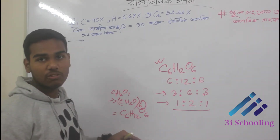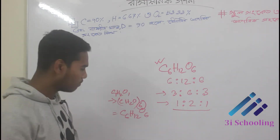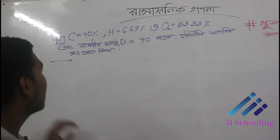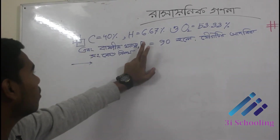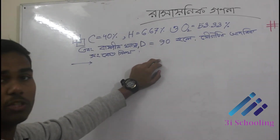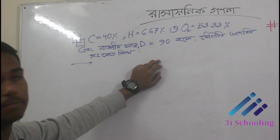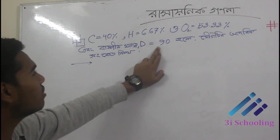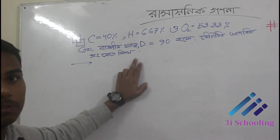If you have any questions, you can answer the question. Carbon is 44%, hydrogen is 7.67%, and oxygen is 53.33%. So it equals 100%. What is the question?